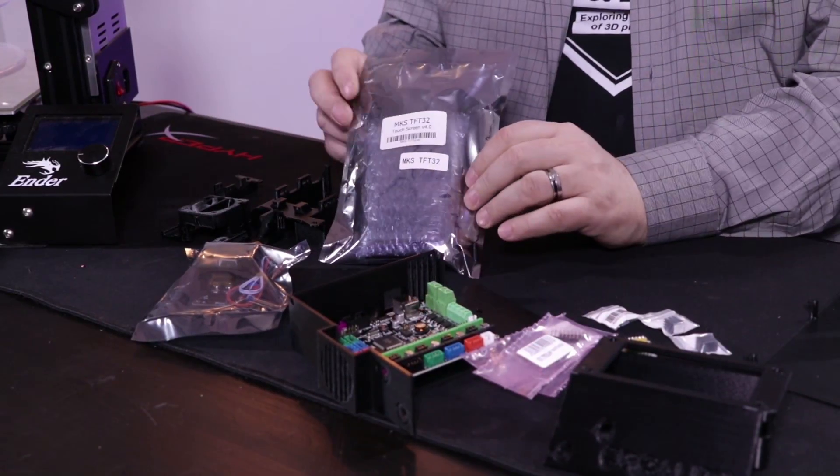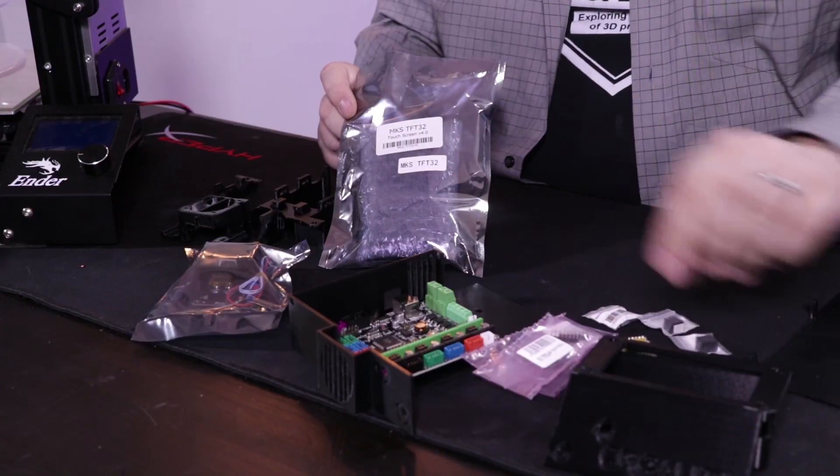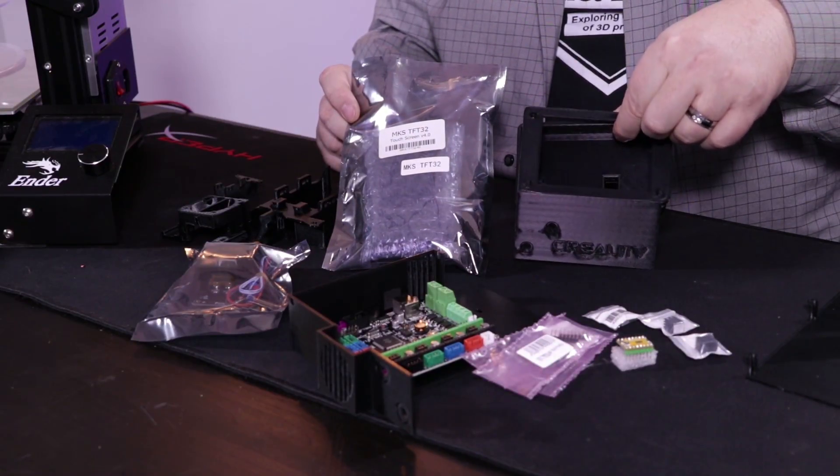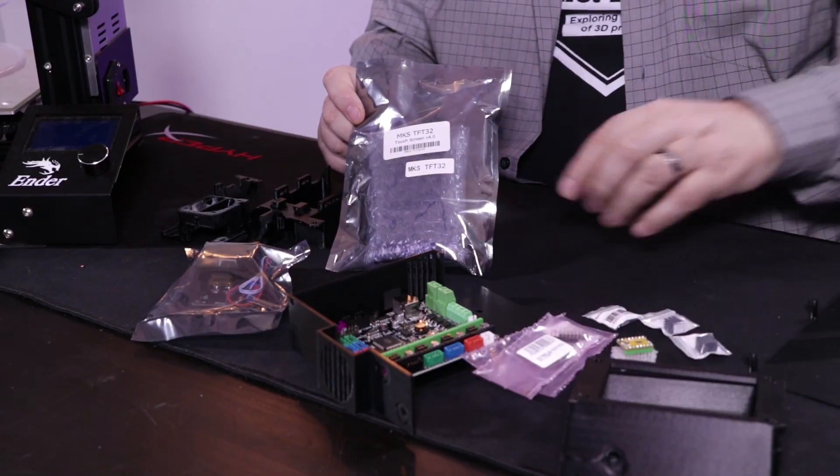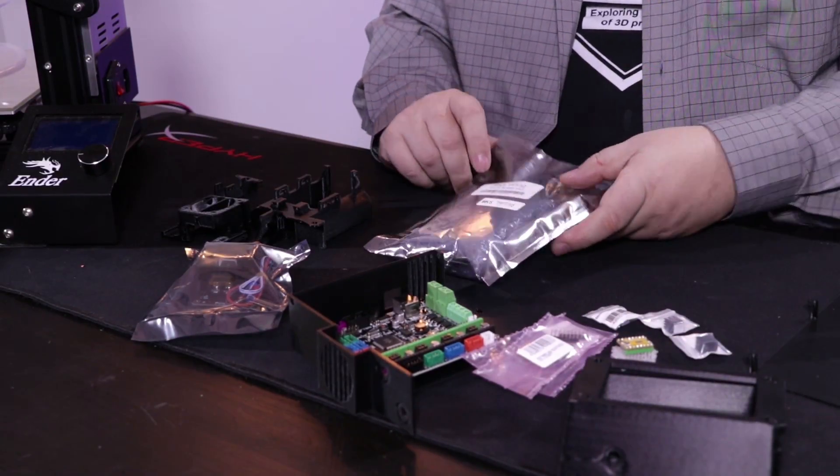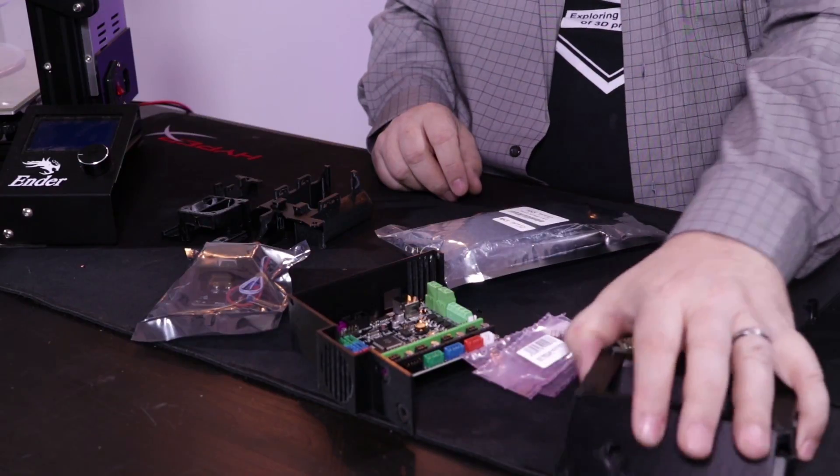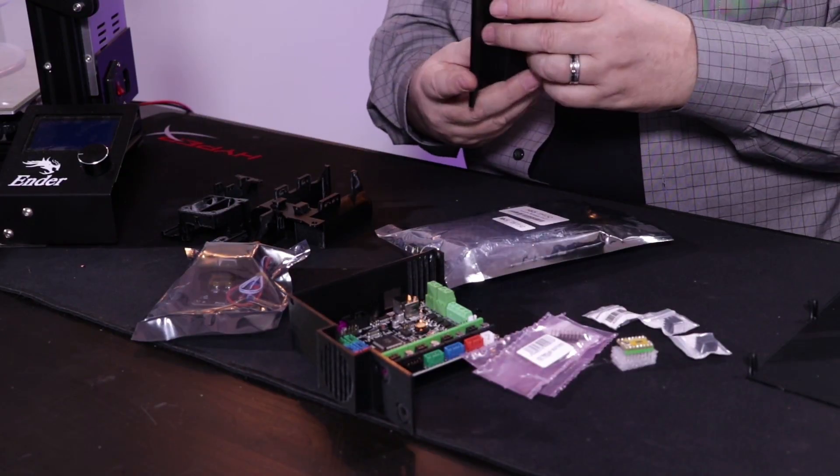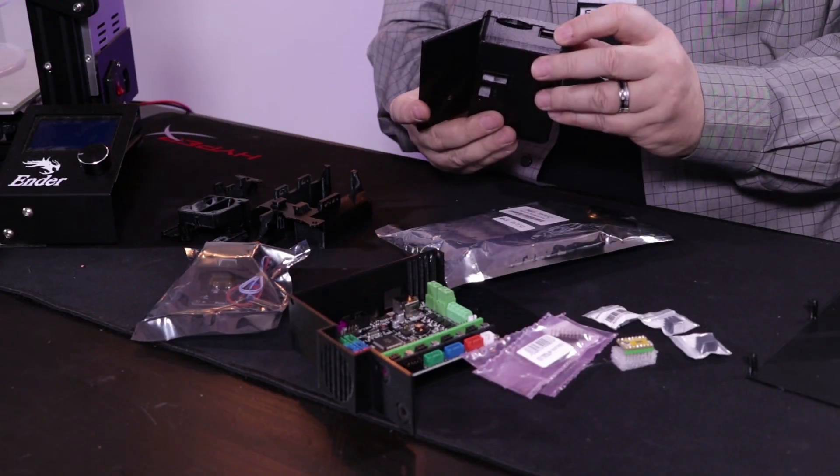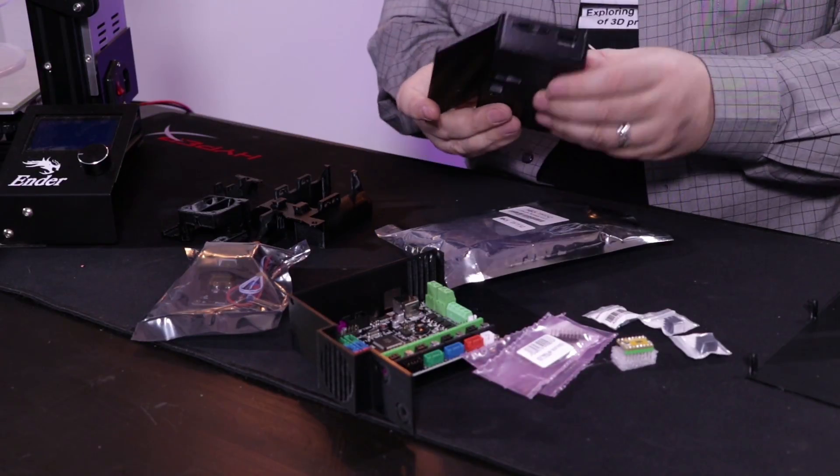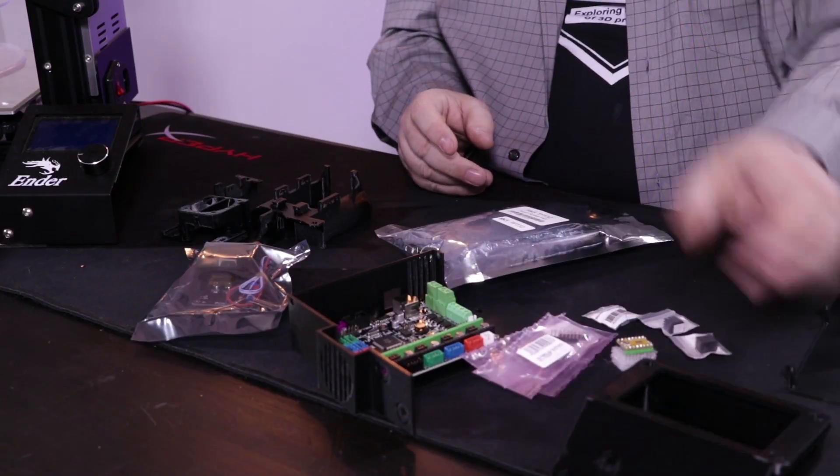We are also going to be adding a touchscreen. And we've printed off a mount and a housing that we found on Thingiverse. Again, I'll leave the link down below so you guys be able to see that as well and go and check that out. The touchscreen is really nice. It is still going to give us the ability to both have an SD card on the side and then a input for whatever we need that input for.